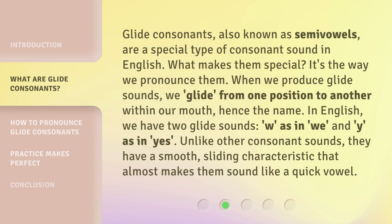Glide consonants, also known as semivowels, are a special type of consonant sound in English. What makes them special? It's the way we pronounce them. When we produce glide sounds, we glide from one position to another within our mouth — hence the name. In English, we have two glide sounds: W, as in 'we', and Y, as in 'yes'. Unlike other consonant sounds, they have a smooth, sliding characteristic that almost makes them sound like a quick vowel.